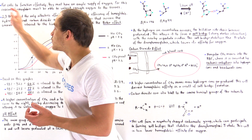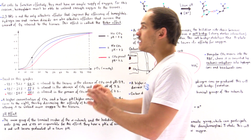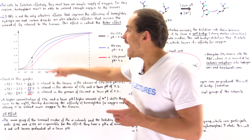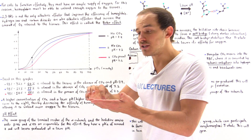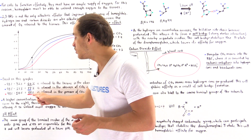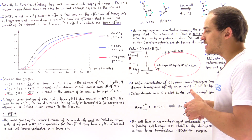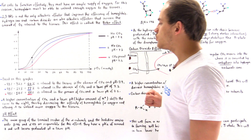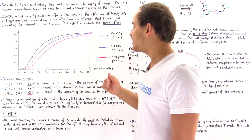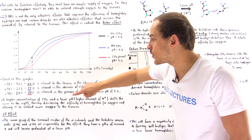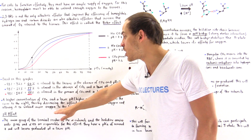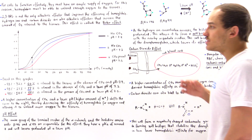Not only does 2,3-BPG shift the curve to the right and lower the affinity of hemoglobin for oxygen, but so does the hydrogen ion concentration and carbon dioxide concentration. These three molecules — 2,3-BPG, H+ ions, and CO2 — together create a very effective hemoglobin molecule able to unload many oxygen molecules to the tissues. Higher CO2 and lower pH (higher H+ ions) shift the curve to the right, decreasing hemoglobin's affinity for oxygen and allowing more O2 to be released to the exercising tissues.